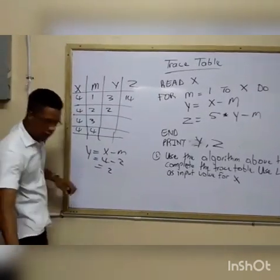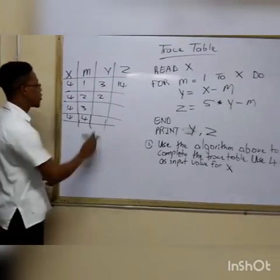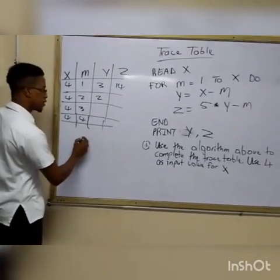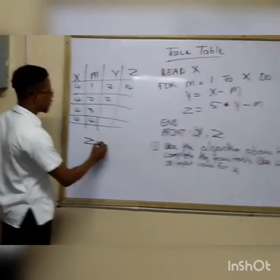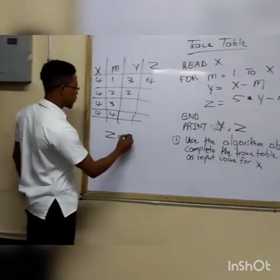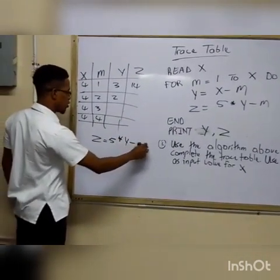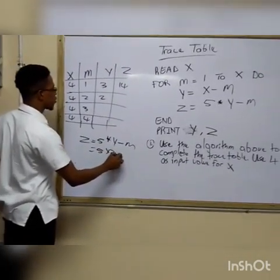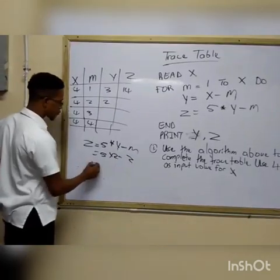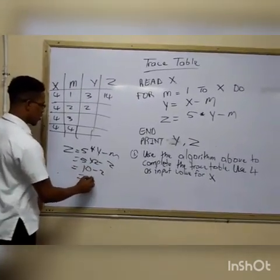5 times y minus m. The current value of y is 2. So 5 times 2 is 10, minus 2, that would be equal to 8.